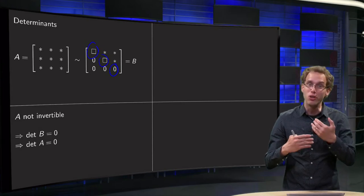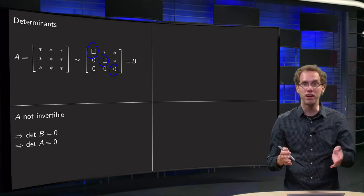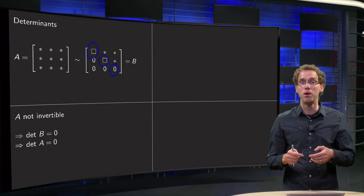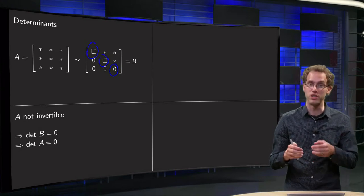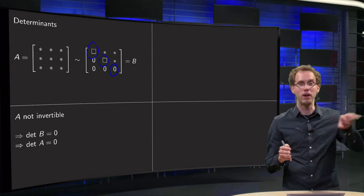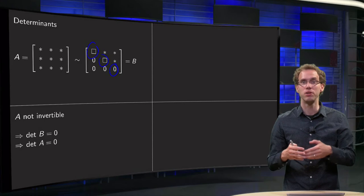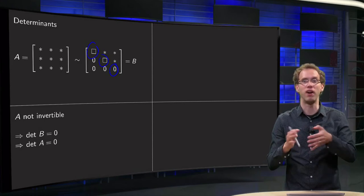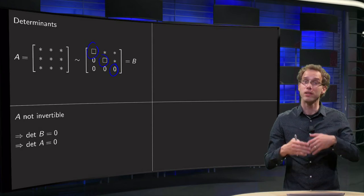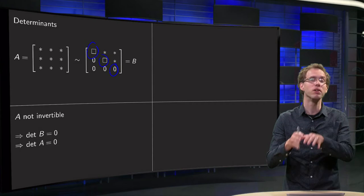But during row reduction the determinant changes. You can multiply with a minus sign or by a factor, not 0. But if your determinant is 0, it stays 0. If you start with B and go back to A through your row reduction steps, your determinant starts at 0 and you do 2 times 0 or minus 1 times 0 or 5 times 0. Your determinant stays 0. So the determinant changes, but if it's 0, it remains 0.